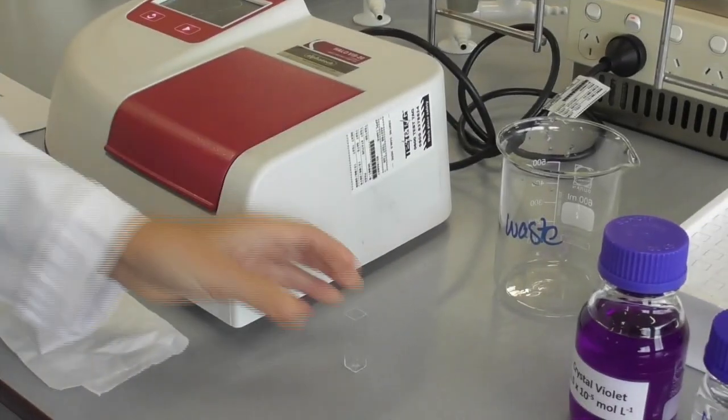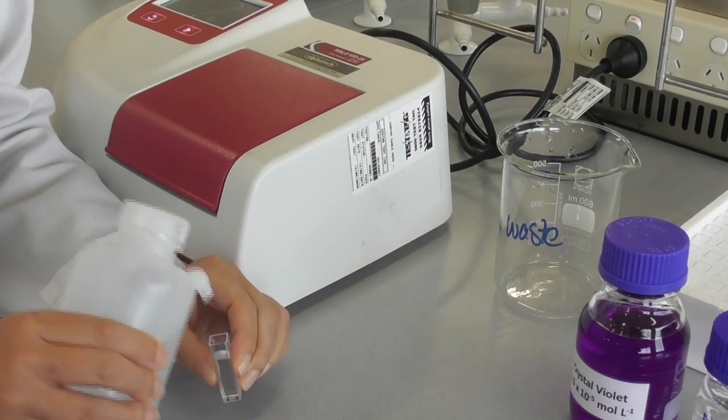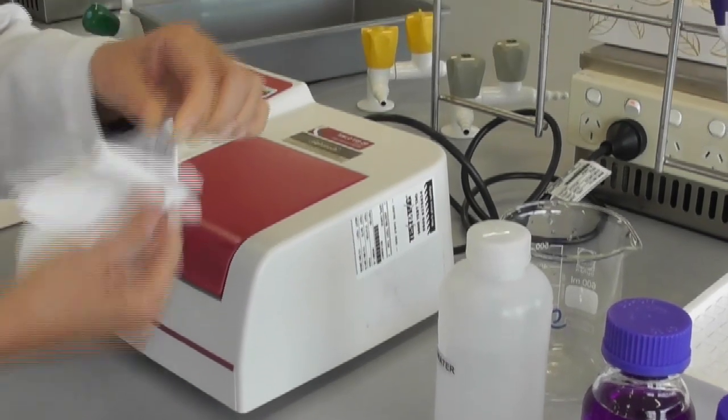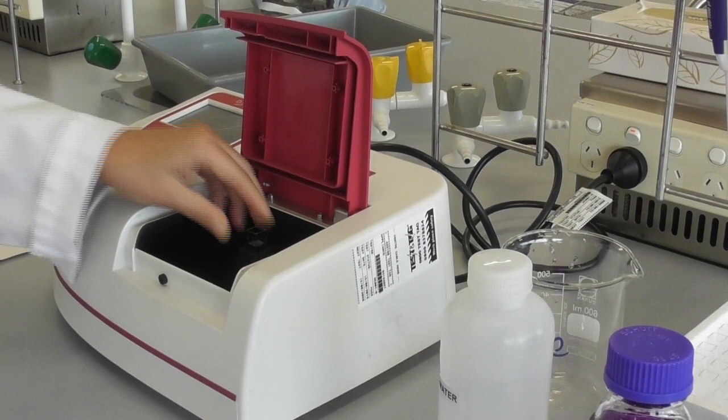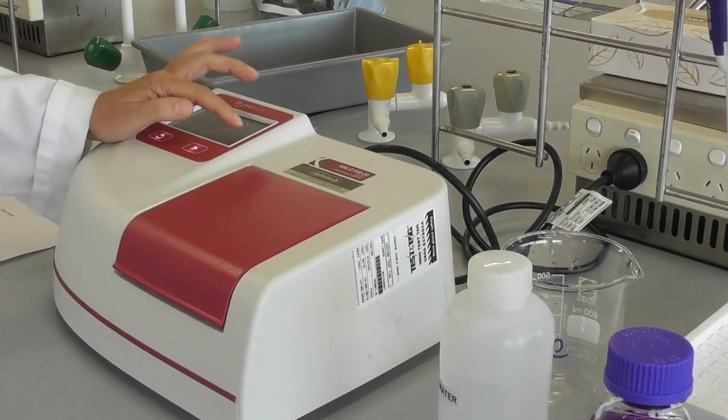Once we have set the wavelength and all the parameters are correct, we need to zero the instrument. We fill a cuvette with distilled water, put it into the holder in the instrument, and then press zero on the display.